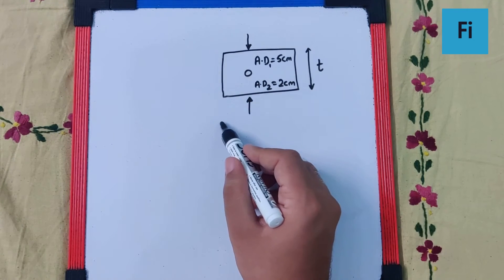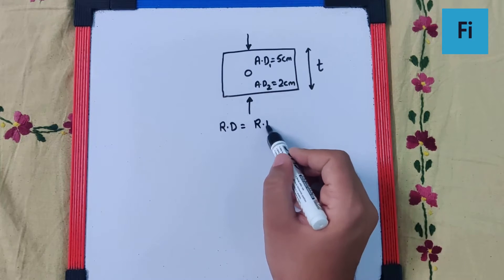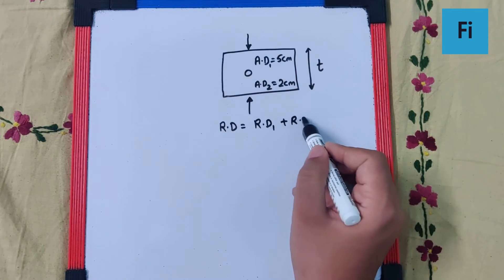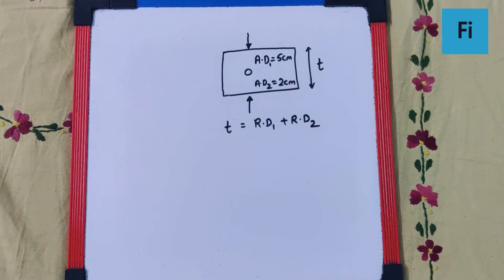So, I can say, the real depth is definitely the real depth 1 plus the real depth 2. That means, the thickness is actually equal to the real depth.